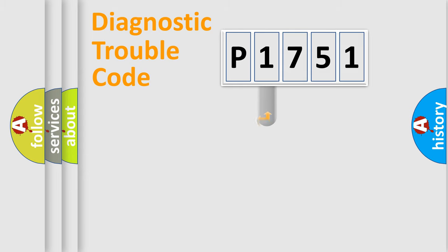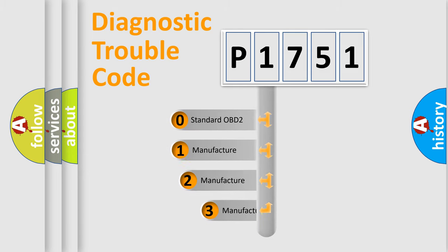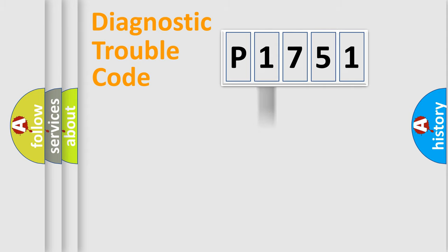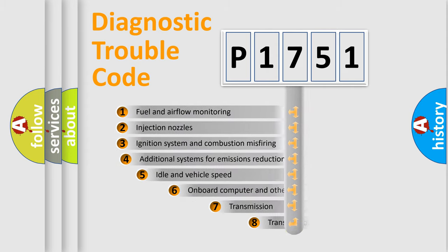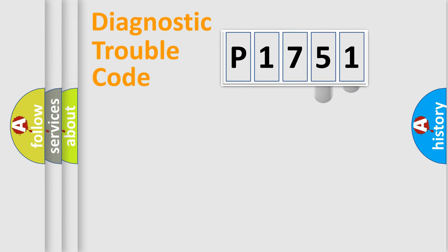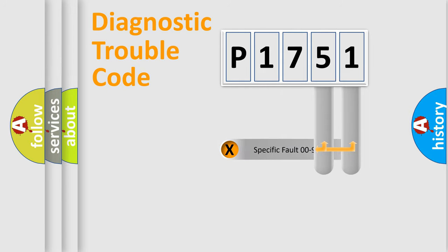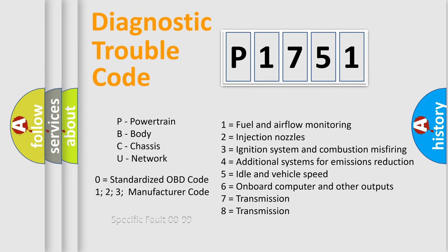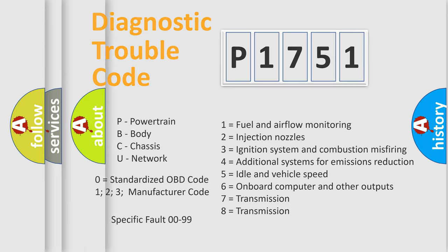This distribution is defined in the first character of the code. If the second character is expressed as zero, it is a standardized error. In the case of numbers 1, 2, or 3, it is a more specific car-specific error. The third character specifies a subset of errors. The distribution shown is valid only for the standardized DTC code, and only the last two characters define the specific fault of the group.